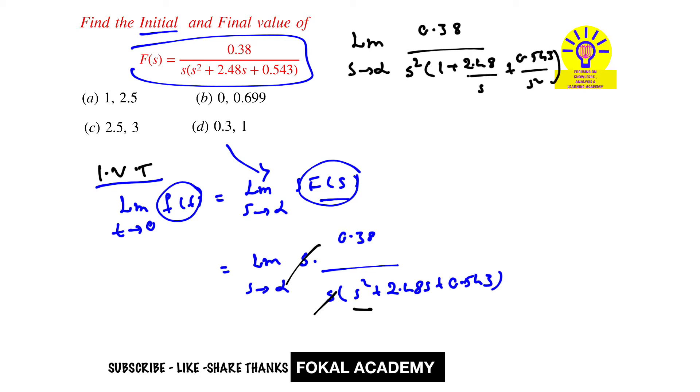Substituting s = ∞, we get 0.38/(∞(1 + 0 + 0)). Since anything divided by infinity equals zero, the initial value equals 0. Therefore, the initial value for the given problem is 0.